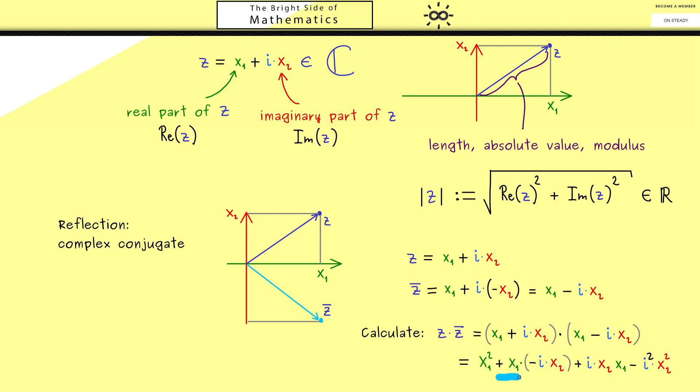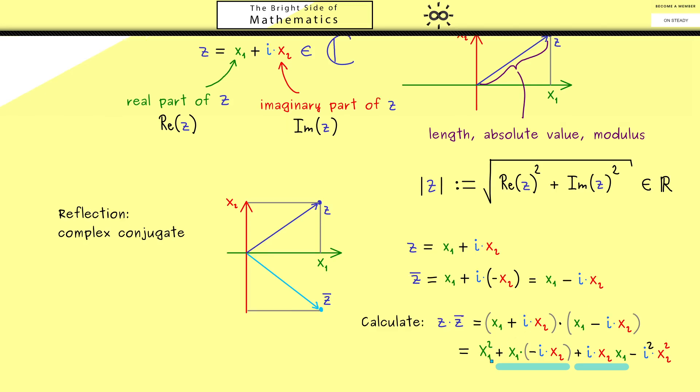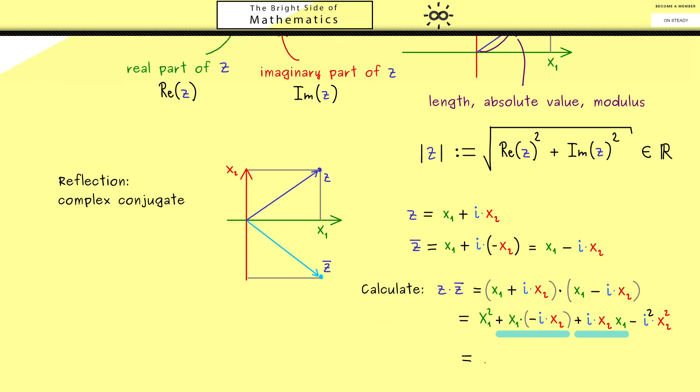Okay, and then you should see the two terms in the middle are exactly the same but with different sign. Hence they simply cancel out. So what remains is simply x₁ squared plus, and there you should see i squared is minus 1. So we have minus 1 times minus 1 which is plus. Hence we also have x₂ squared. And now you should see this is exactly what we have in the square root for the absolute value. Or in other words this has to be the absolute value of z squared. Now I can tell you this relation here will be very important when you deal with a lot of complex numbers.